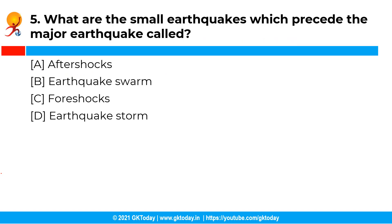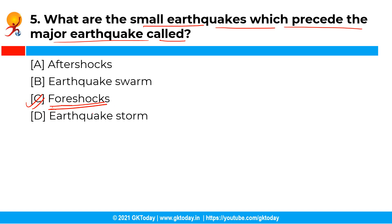What are the small earthquakes which precede the major earthquake called? You have the following options and the correct answer is option C, that is foreshocks. The small earthquakes called foreshocks often precede a major earthquake by days or in some cases by as much as several years.